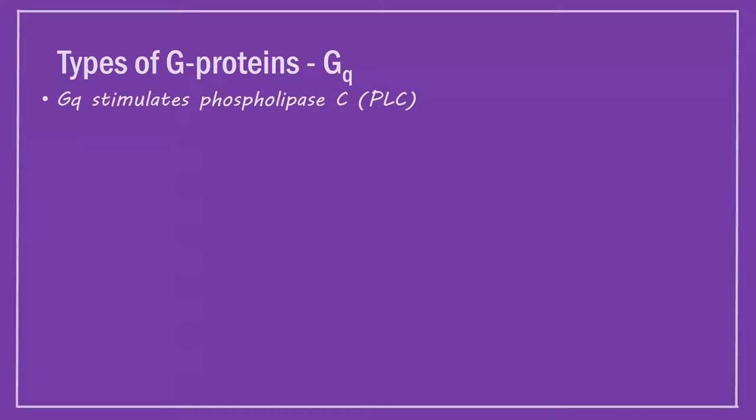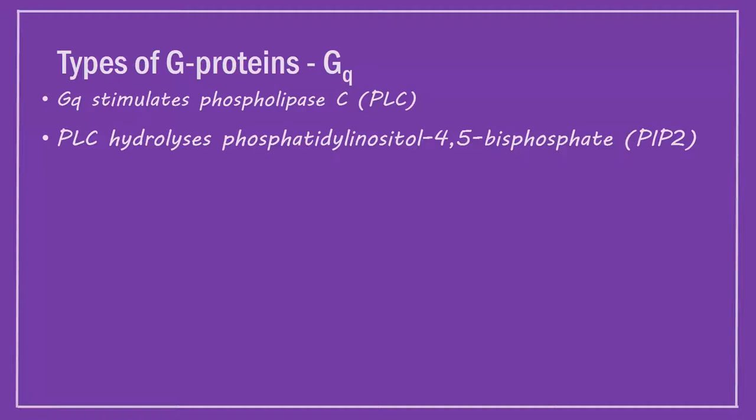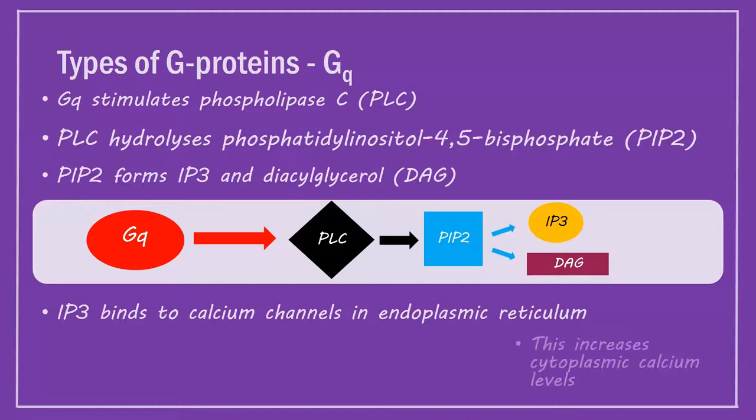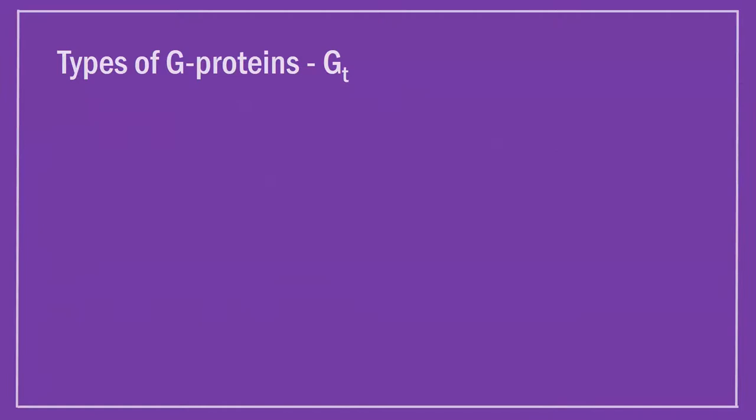Gq protein activation results in stimulation of phospholipase C. This hydrolyzes phosphatidylinositol-4,5-bisphosphate, forming the products IP3 and diacylglycerol. IP3 then binds calcium channels in the endoplasmic reticulum, increasing calcium concentration levels in the cytoplasm.